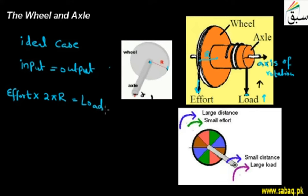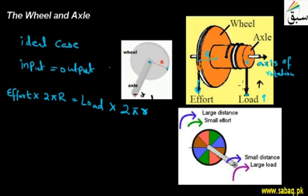The load travels the distance covered by the load on the axle side, which also has a circular rotation. The circumference of the axle, because the radius of the axle is small r, will be 2πr. So we know that effort into the distance traveled by the effort equals load into the distance traveled by the load. This distance is a perpendicular distance from the applied effort, making a 90-degree angle.